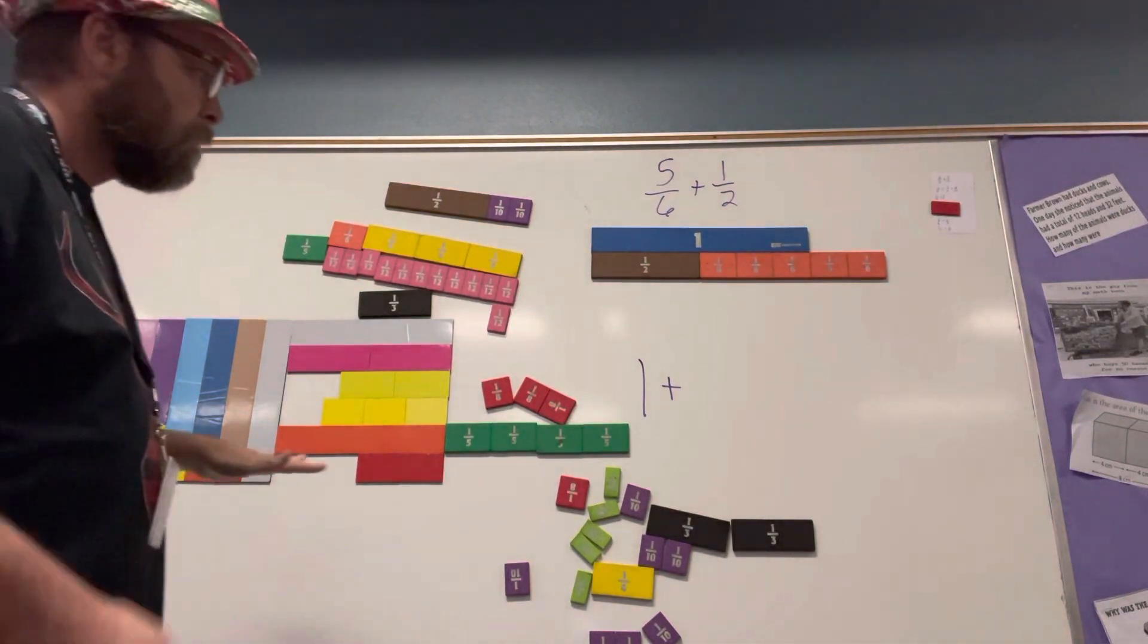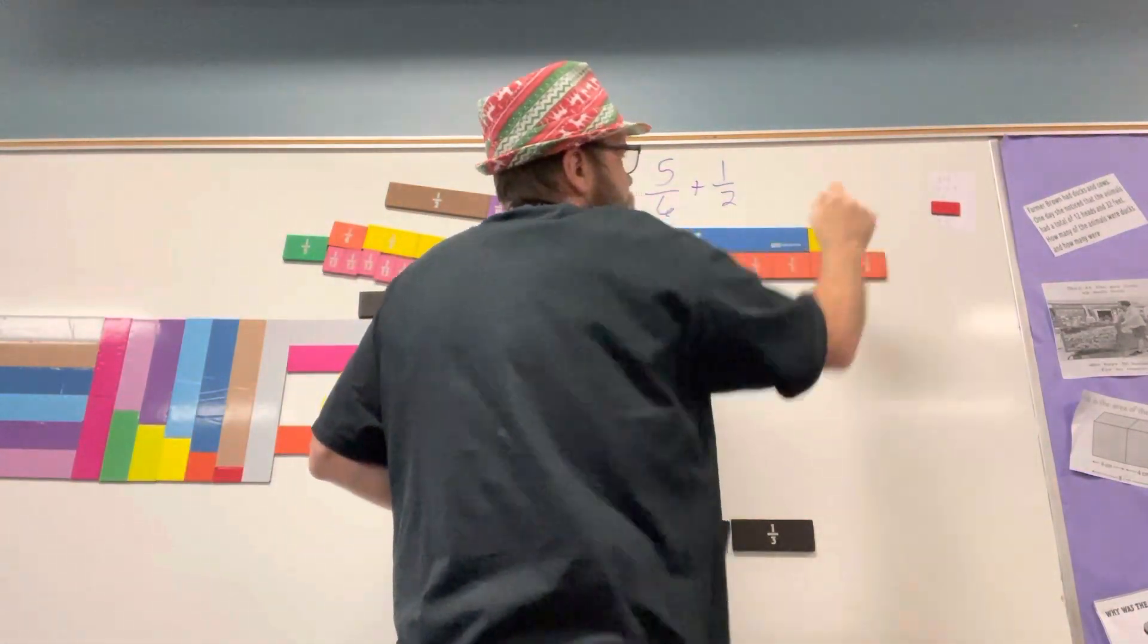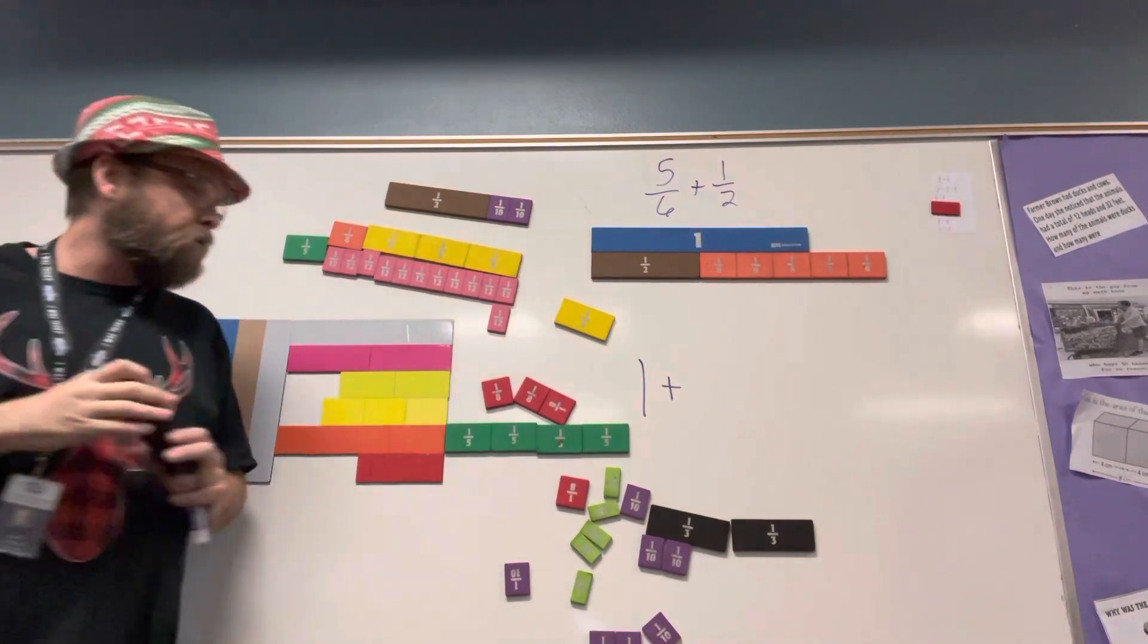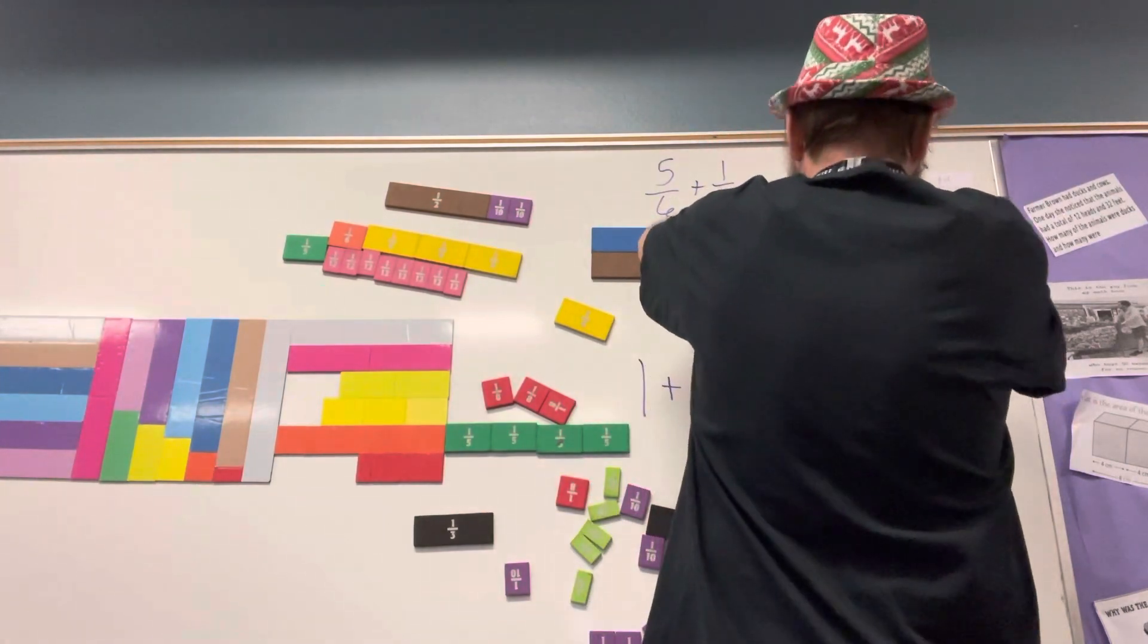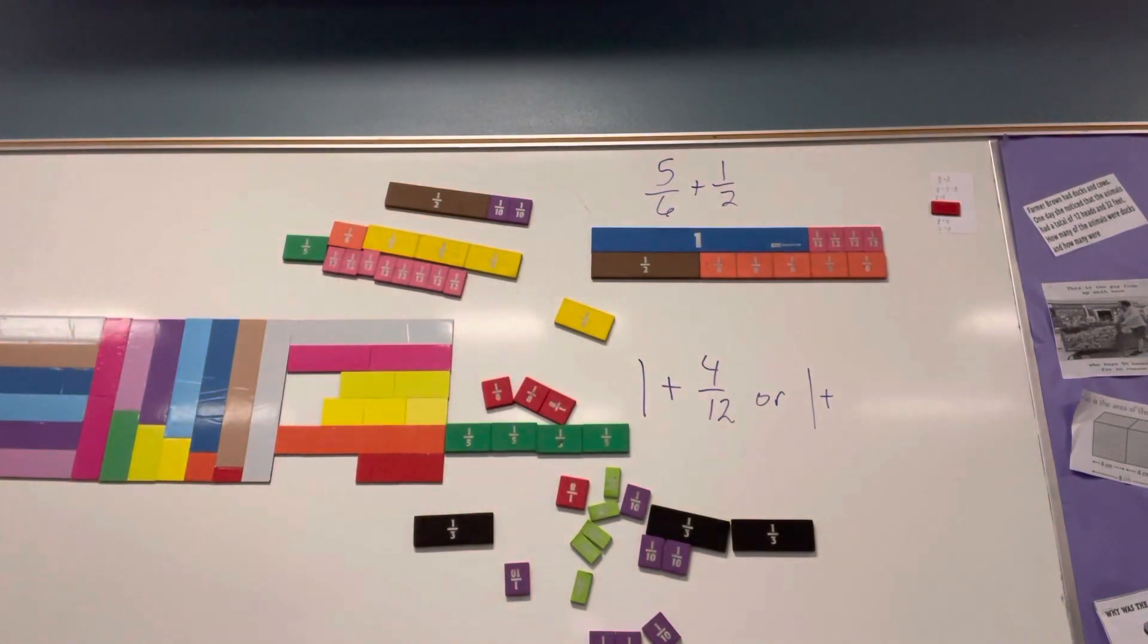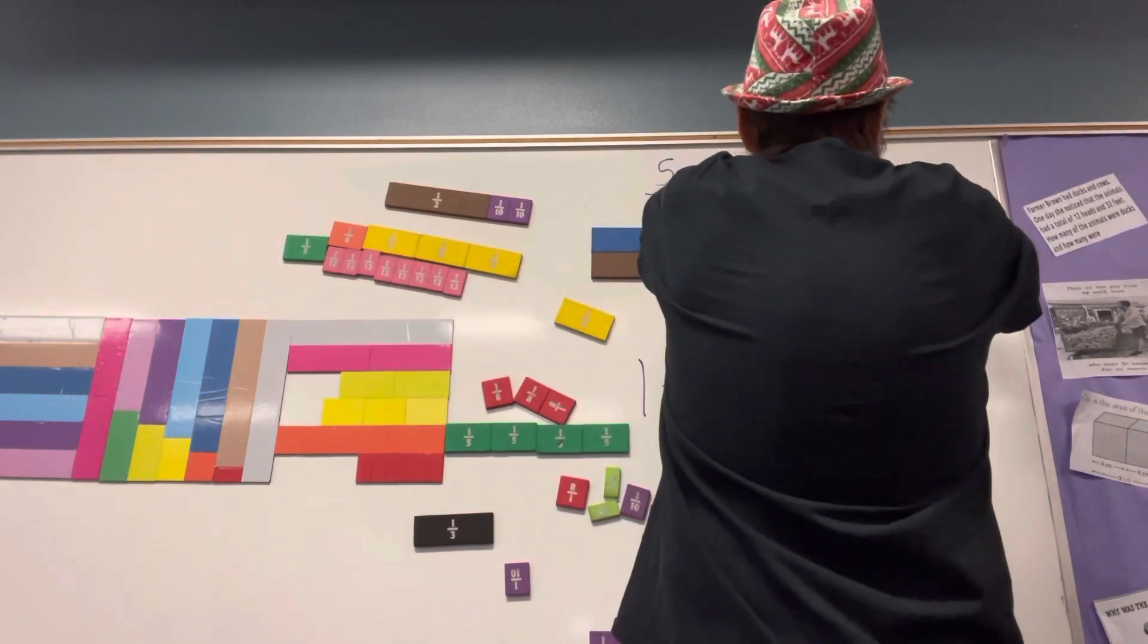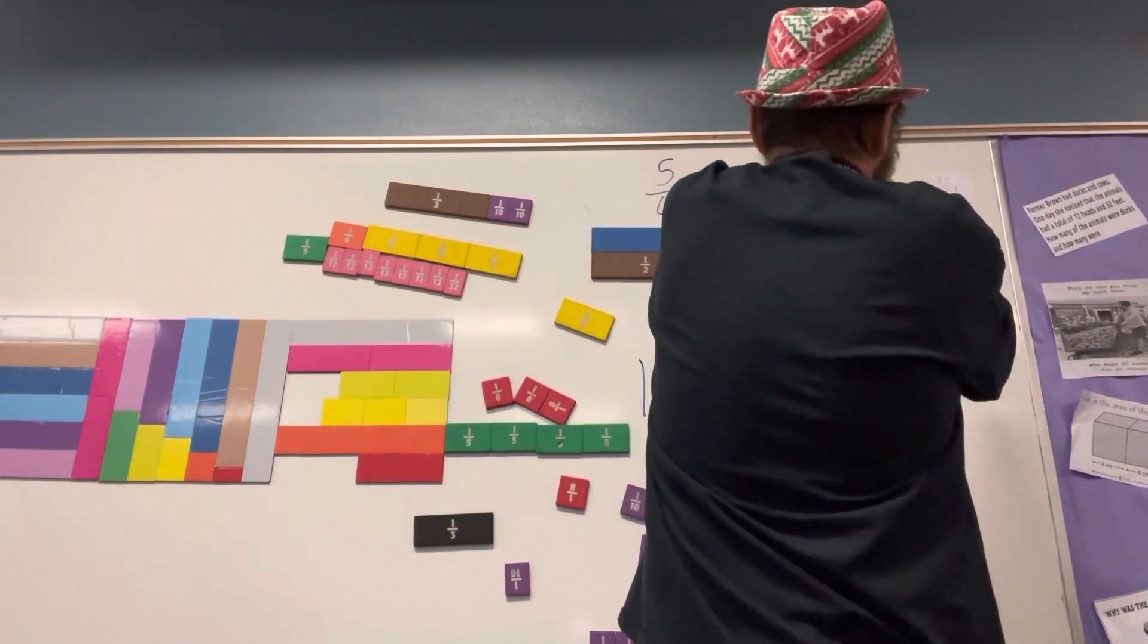Kaden suggests maybe one fourth. Let's see. Not one fourth, that's too small. I could do four twelfths. Jolie suggests maybe five sixteenths. Let's see if five sixteenths works. Three, four, five. Now it's just a little short, so five sixteenths doesn't work.